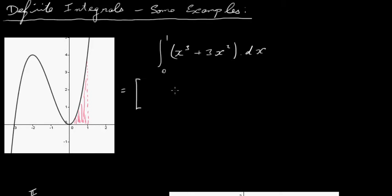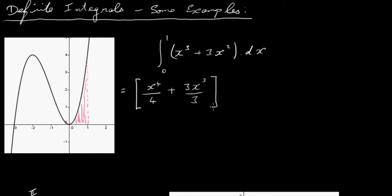So first of all, we want to integrate x cubed — that's simply x to the power of 4 over 4. Then we integrate 3x squared, which gives us 3x cubed divided by 3. And we are going from 0 to 1.